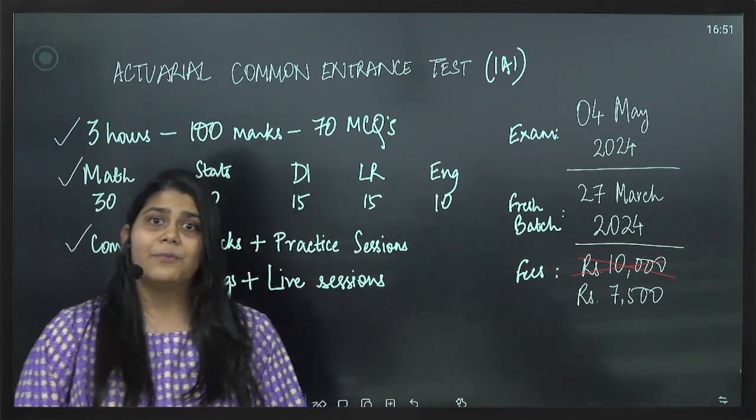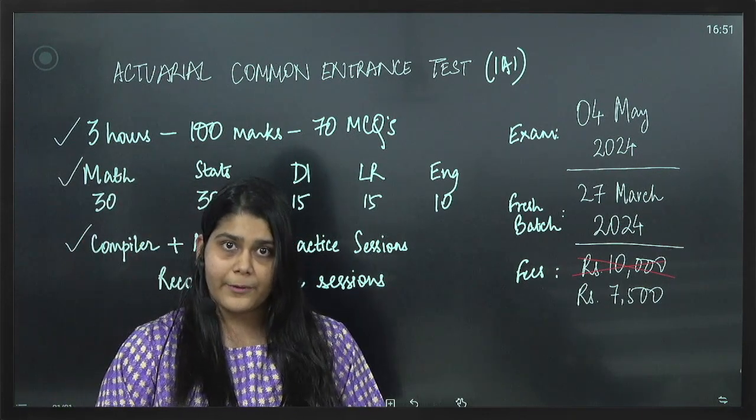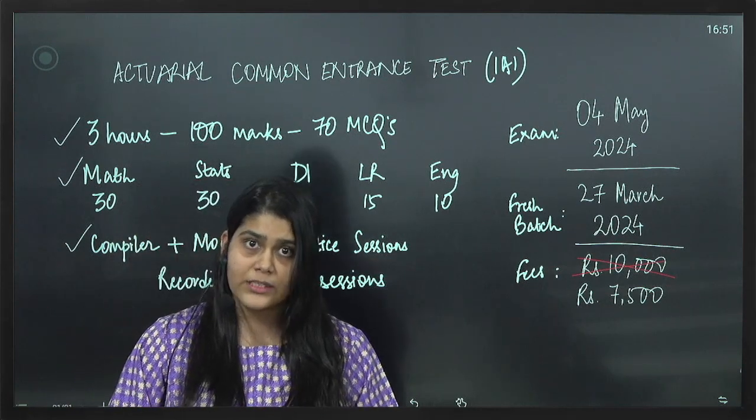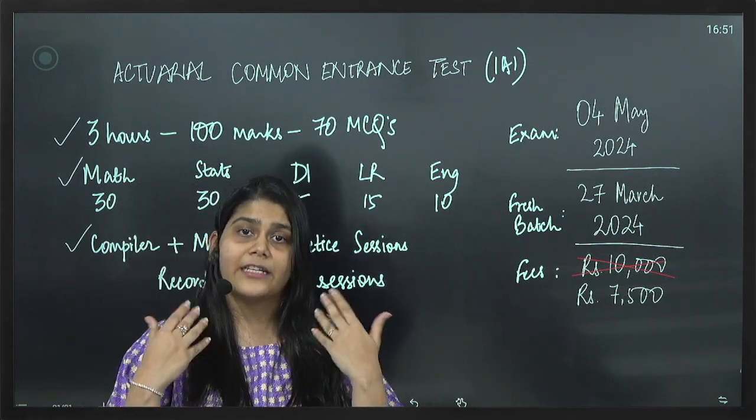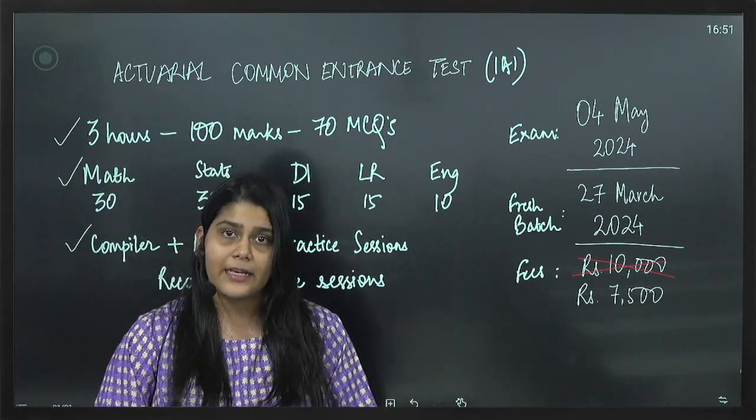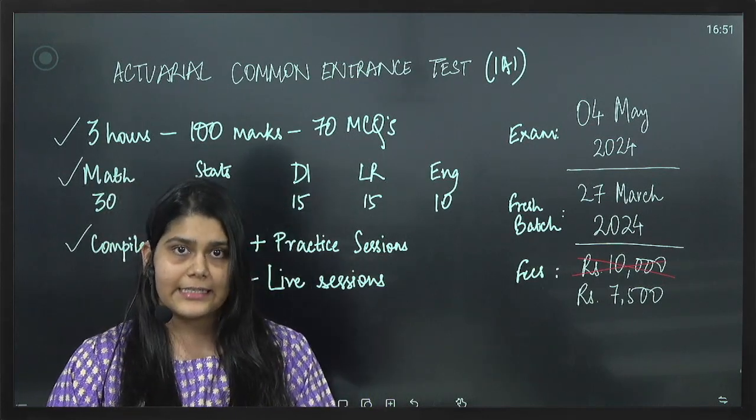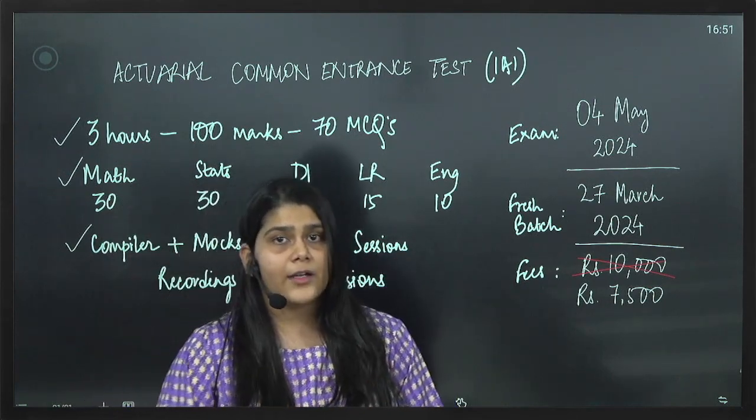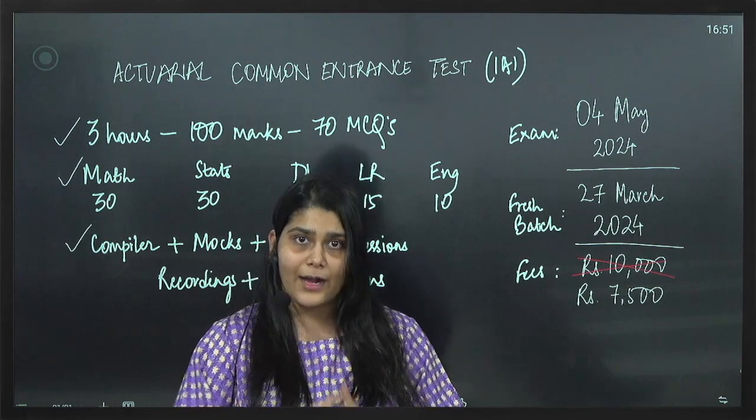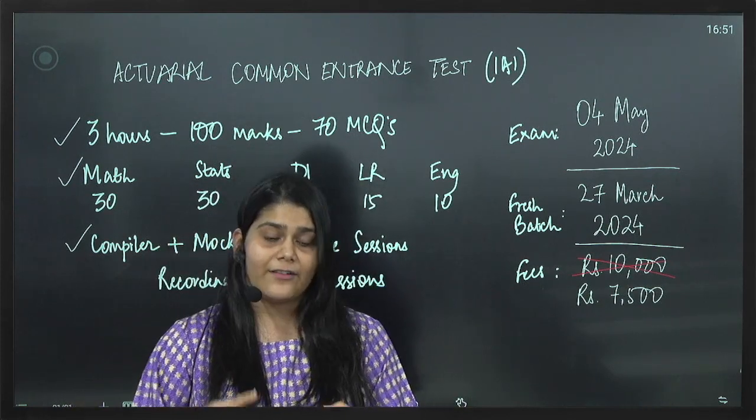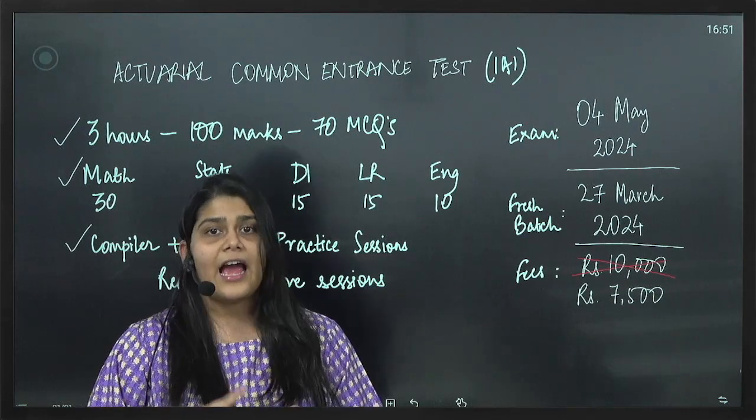DI and LR are completely analytic portions of the paper. They cover different forms of data analysis tools. They cover different forms of data presentation tools also. And the LR portion focuses mainly on your logical reasoning skills. The English portion does not have any literature part to it. It is completely language based which means they will be testing your comprehension skills. They will be testing your vocabulary and your grammar.